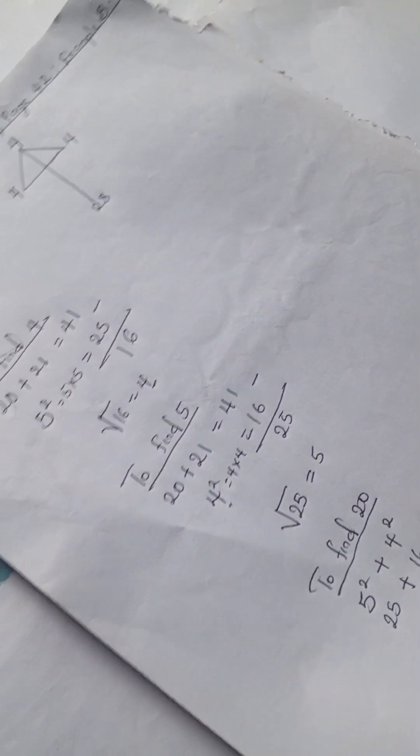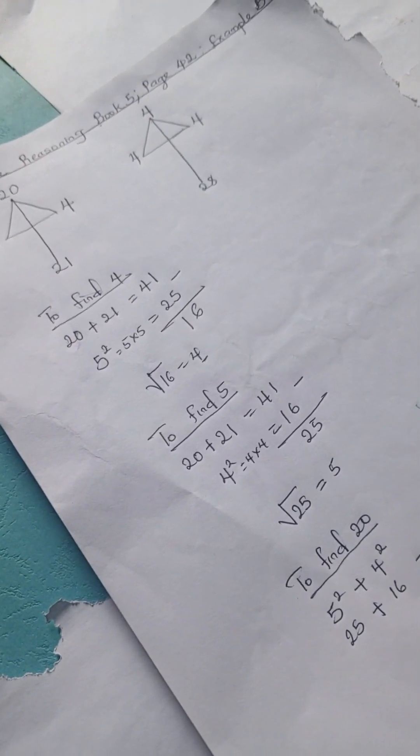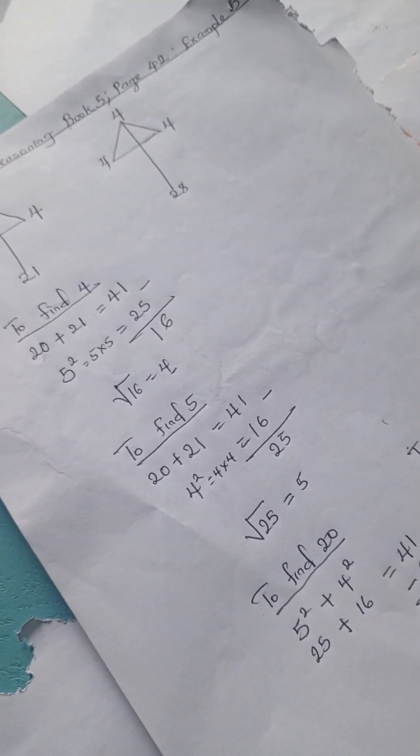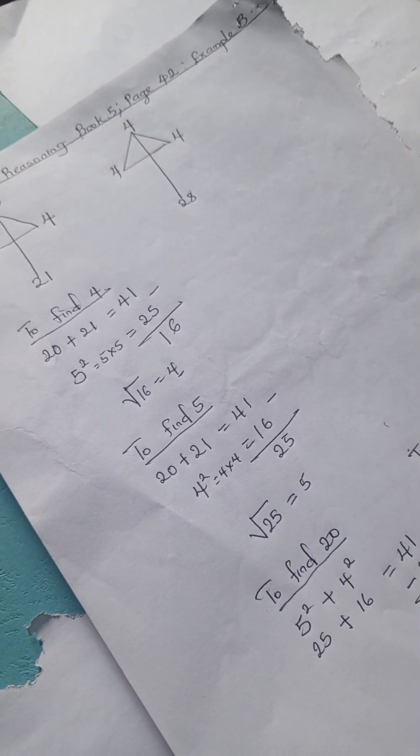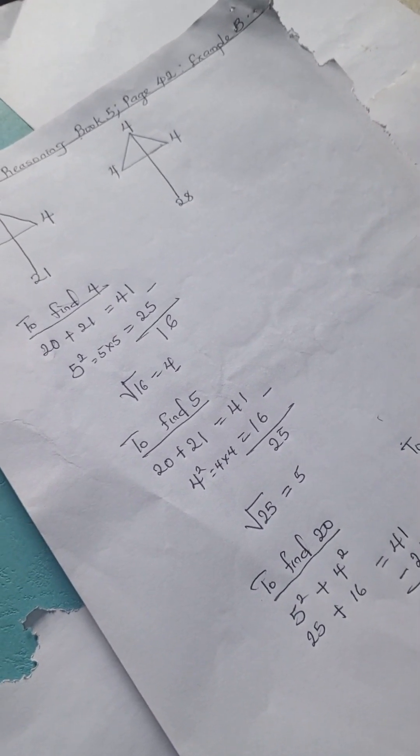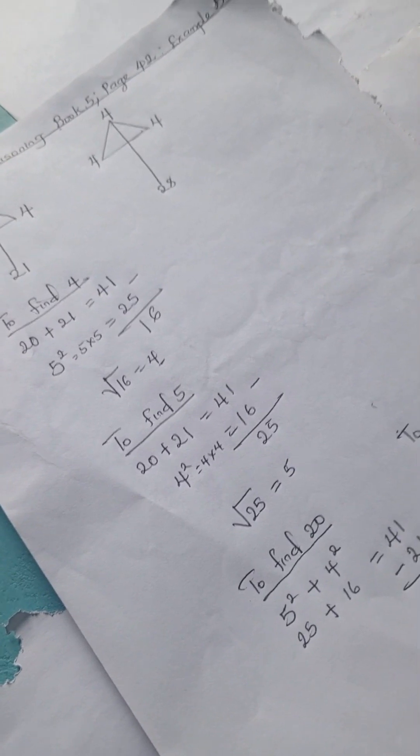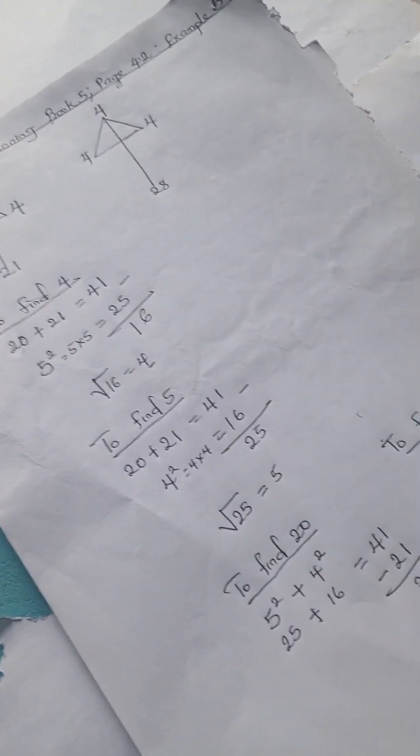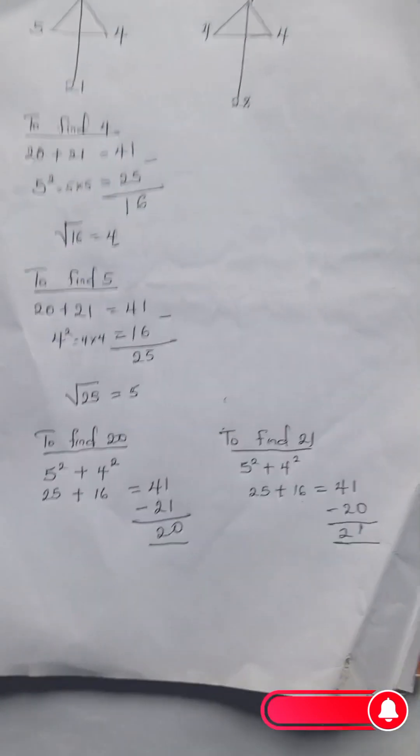To find 21, we can repeat the same process. 5 squared plus 4 squared, 25 plus 16, gives us 41. We're going to subtract 20 from 41, and we have 21. That is it for this problem.